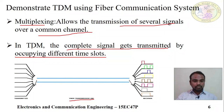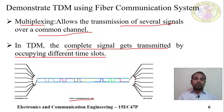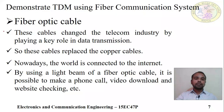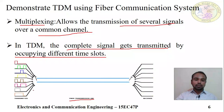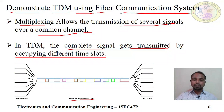Time division multiplexing: the complete signals from source A, source B, and source C are divided into different time slots, and all signals are sent one by one over the channel. This channel is called TDM. The signal travels over the fiber optic channel. This experiment is called the Demonstration of TDM using Fiber Optic Communication System — here we are using fiber cable instead of copper cable.